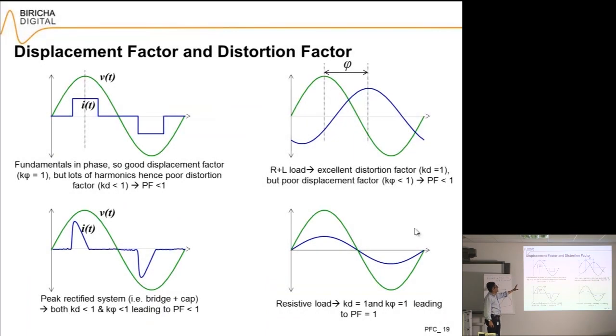It is perhaps explained best by this diagram on the top left. I have got my voltage sinusoid, I've got a current that has got almost perfect displacement factor. You will see that the current fundamental is actually almost in perfect phase, so my displacement factor is near one. That is really good, but because of these very sharp edges